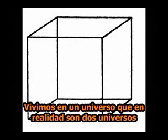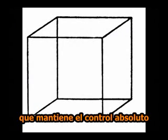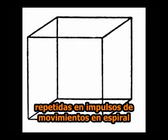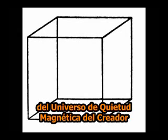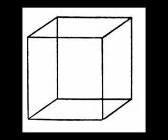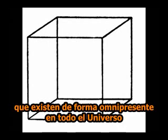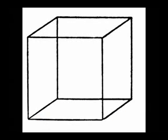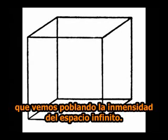We live in a universe which is in reality two universes: the magnetic universe of universal mind, which maintains absolute control over the electric universe of simulated mind ideas repeated in pulsing spiraling motions. Here we are looking at a magnetic cube from the creator's universe of magnetic stillness. This is space geometry which exists beyond human sensory perception — a geometry of absolute stillness and cold that exists omnipresently throughout the universe. These magnetic cubes control all motion in the electrical universe and give form to the spherical and gyroscopic ring systems we see populating the vastness of the infinity of space.